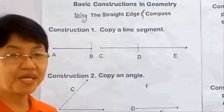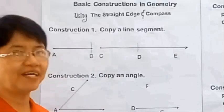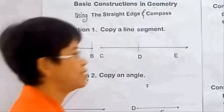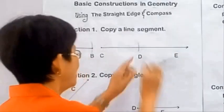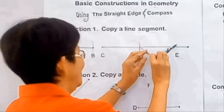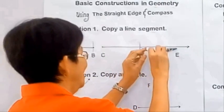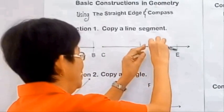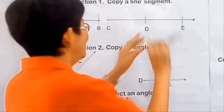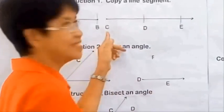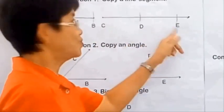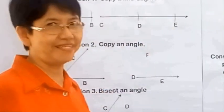You can copy another segment on the same ray from D, and then we have CD is congruent to DE.